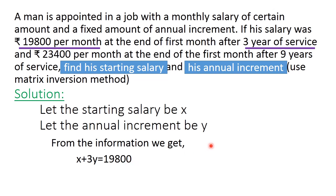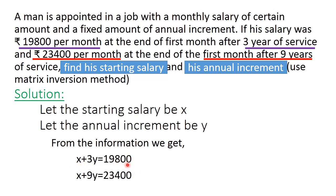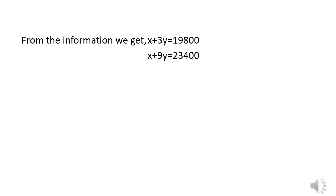Similarly, it is given that after 9 years of service he will get Rs. 23,400. So, the starting salary plus 9 times the annual increment equals 23,400. The second equation is: X + 9Y = 23,400. These are our two linear equations. We now solve them using the matrix inversion method.